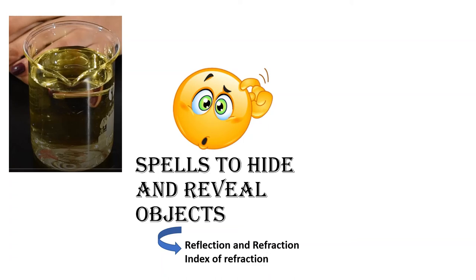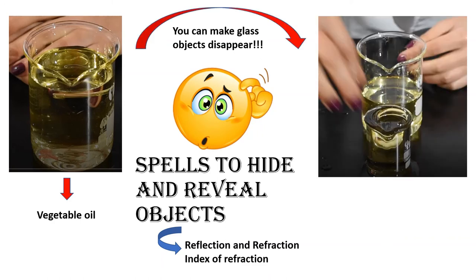If you eliminate reflection and refraction by a glass object, you can make that object disappear. That very special liquid that I use is just vegetable oil, which has nearly the same index of refraction as the glass. That means if you put glass into oil, you can almost make it disappear.